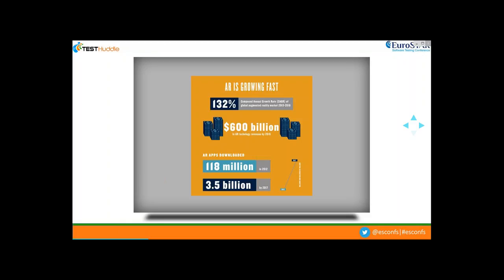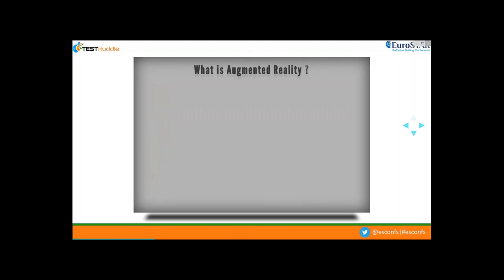Thank you, Rajini. Hello everyone. Let's take a dive into the depths of this technology. If you go by the dictionary meaning of 'augment,' it means enhancing or increasing one's own properties. Going by this definition, augmented reality is a direct or live feed of the real world that is augmented by computer-generated input, which enhances the end user's perception of the world by providing additional information that has communication capabilities.